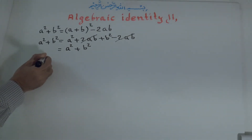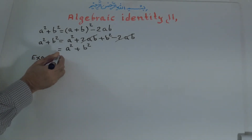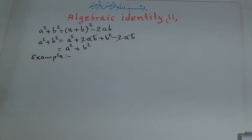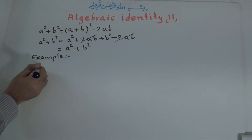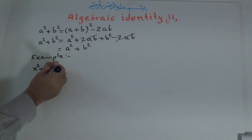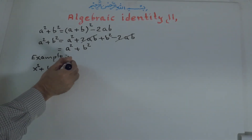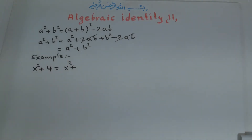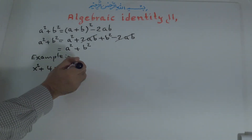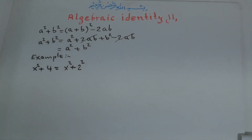Example. If you have x to the power of 2 plus 4, this is equal to x to the power of 2 plus 2 to the power of 2, because 2 times 2 is 4.